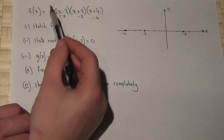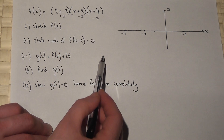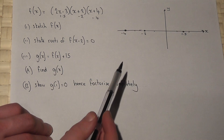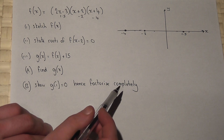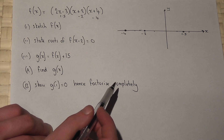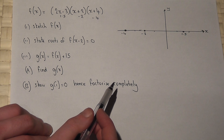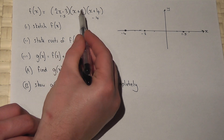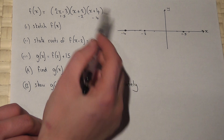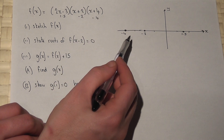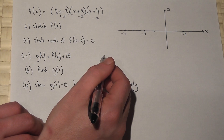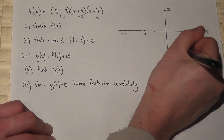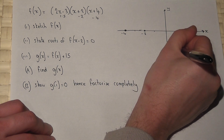It's also a cubic so it'll have a nice s-shape. We can also find the y-intercept. This is where x equals 0, so we work out minus 3 times 2 times 4. 2 times 4 is 8, times minus 3 is minus 24. So the y-intercept is at minus 24.